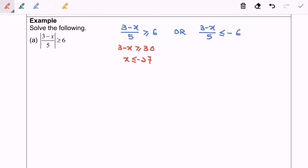Let's focus on the right-hand side. Again, 3 minus x less than or equal to negative 30, and we will have x greater than or equal to 33.